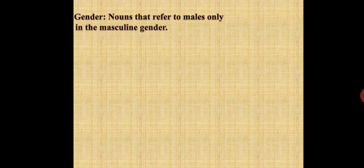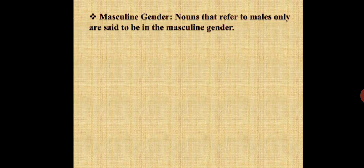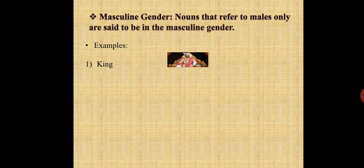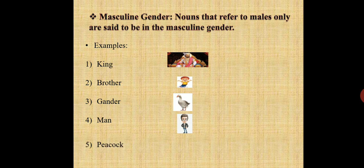Let us know more about masculine gender. Masculine gender means nouns that refer to males only are said to be in the masculine gender. For example: king, brother, gander, man, peacock, etc.